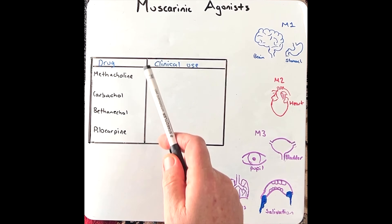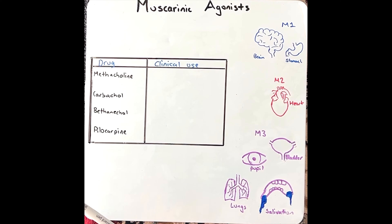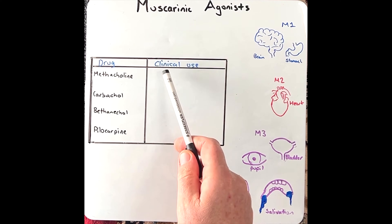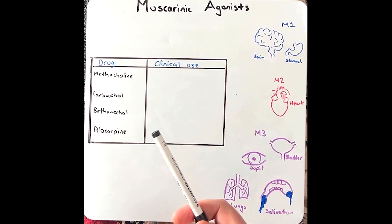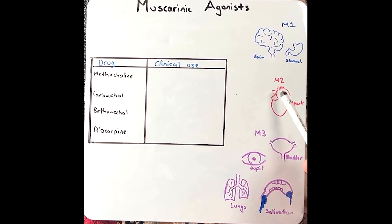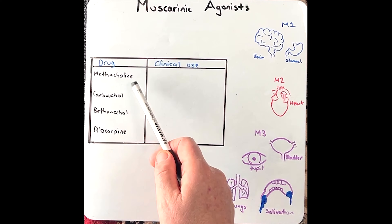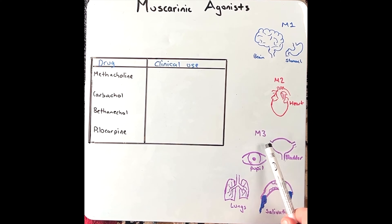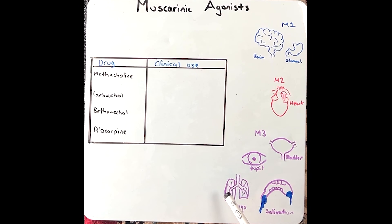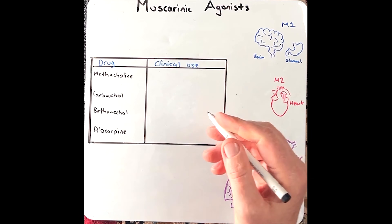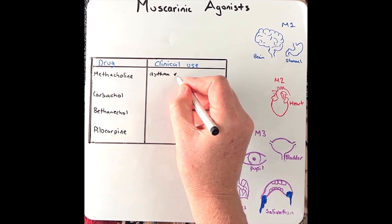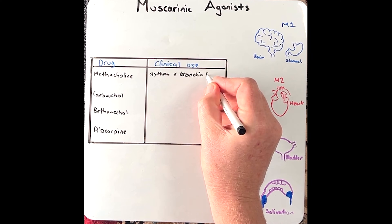Direct muscarinic agonists have different clinical uses depending on how potent they are and how selective they are for the muscarinic receptors. Starting with methacholine: it stimulates M3 receptors on the smooth muscle of the bronchi, leading to bronchoconstriction and increased mucous secretion. Therefore, it is used to diagnose asthma and bronchial sensitivity.